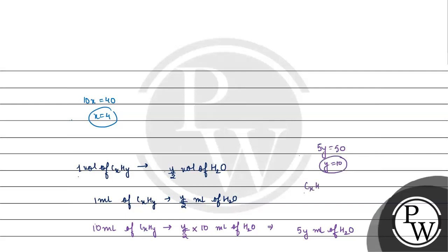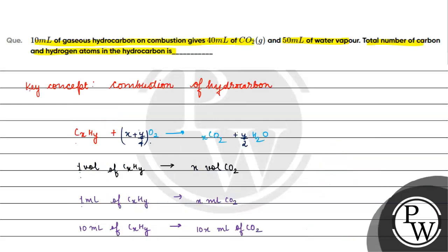What will be the formula for the hydrocarbon? It is C4H10. So the total number of carbon atoms is 4 and hydrogen atoms is 10. The total answer for the question will be 14. I hope you understood it well — all the best!